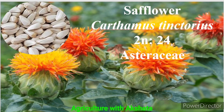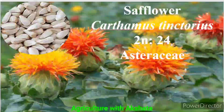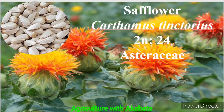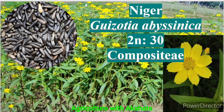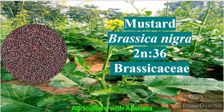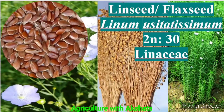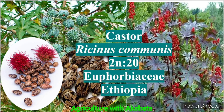Safflower: Carthamus tinctorius, 2n = 24, Asteraceae or Compositae family. Niger: Guizotia abyssinica, 2n = 30, Compositae family. Mustard: Brassica nigra, 2n = 36, Brassicaceae or Cruciferae family. Linseed also called Flaxseed: Linum usitatissimum, 2n = 30, Linaceae family.